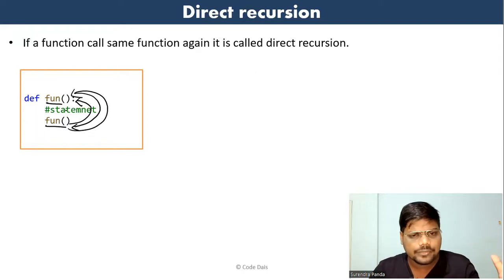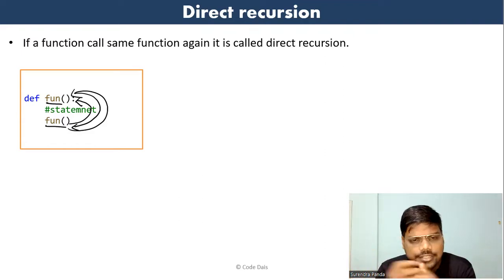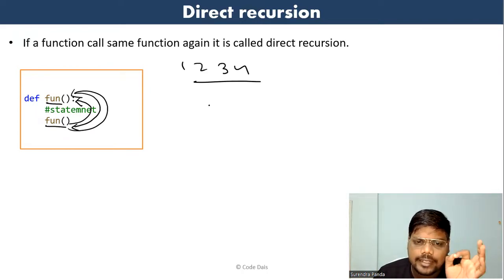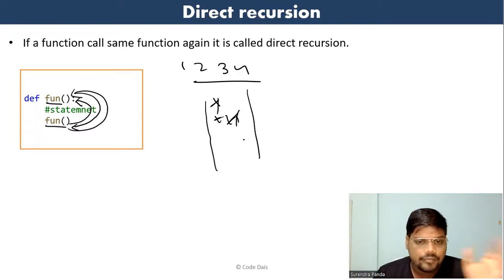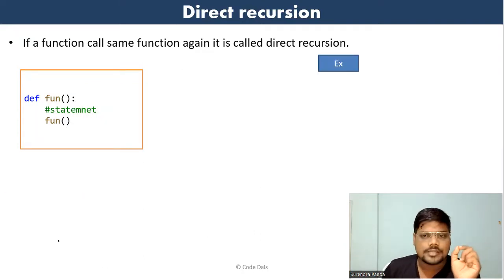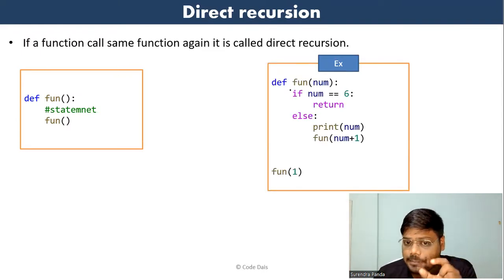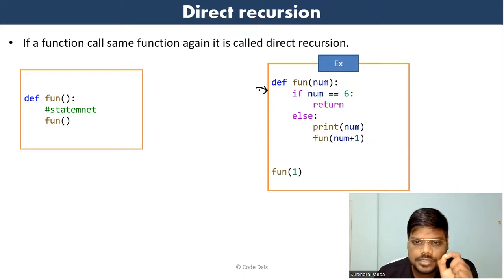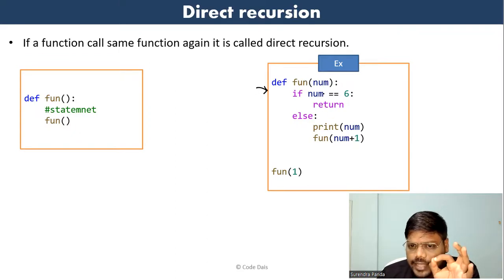All the examples we already completed are related to direct recursion only — factorial of a number, printing 1 2 3 4, printing a star pattern. All are coming under direct recursion. In the example shown, we're passing one which stores inside num; condition false, go to else, print num, then call the same function passing num plus one, and so on until num equals six.